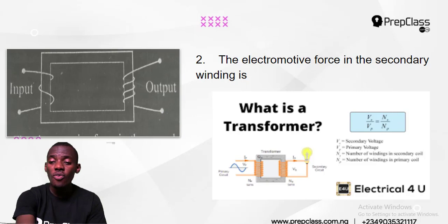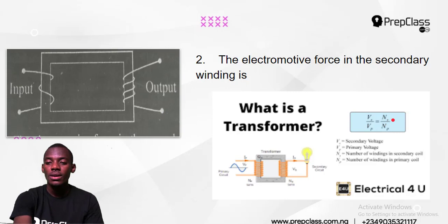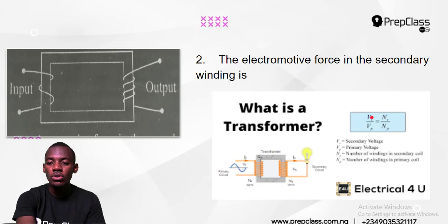VS means secondary EMF, VP means primary EMF, NS means secondary windings, and NP means primary winding. This means that since VS over VP equals NS over NP, what happens to voltage V also happens to N. They both have S on top and P on the bottom — they are like friends. That means if voltage increases, windings also increase; if windings increase, voltage or EMF will also increase.